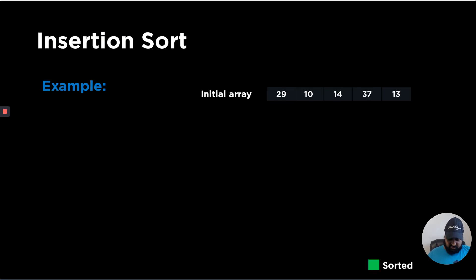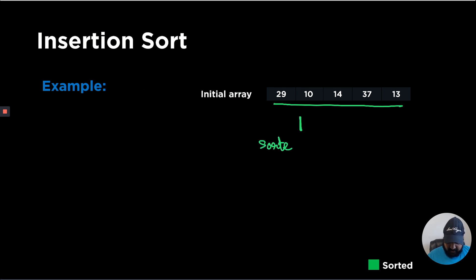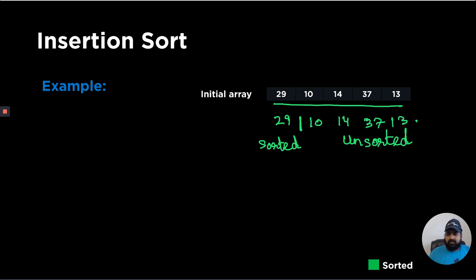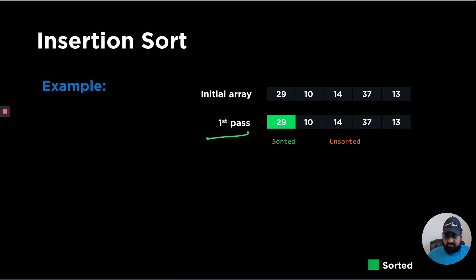Let's take a quick worked example of insertion sort. Our initial array looks like this. At the end of the first pass, we have one sorted region and another unsorted region. The sorted region will have just one number, which is the first number in our array, and all the other numbers are in the unsorted region. After the first pass, we have one value in the sorted region, which is the first value in the array.